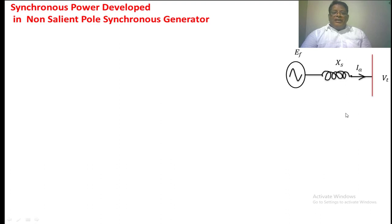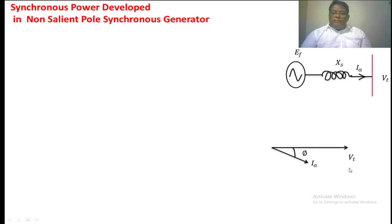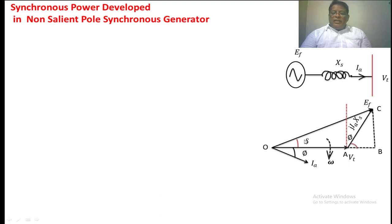For the synchronous generator, where we neglect the armature resistance, we use the phasor diagram. We have taken VT on the x-axis. The current lags the bus voltage by angle phi. We are adding the jIA·Xs component drawn perpendicular to IA, from the tip of VT, giving us the jIA·Xs phasor. The phasor sum of VT and this phasor is the excitation voltage EF. The angle between the terminal voltage and the excitation voltage is delta. We have constructed a right angle triangle using a dotted line; this angle is phi, and this angle is delta minus phi.